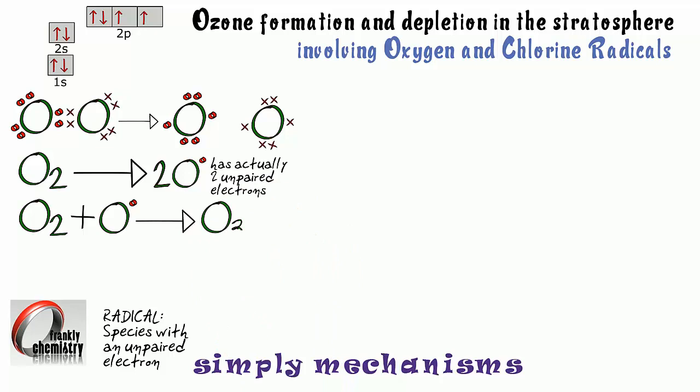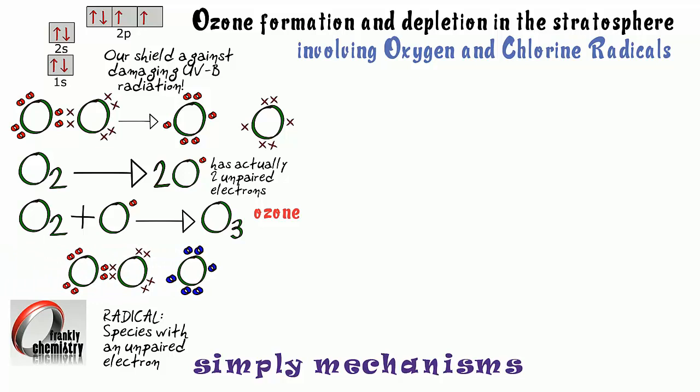Now this is how ozone is formed in the stratosphere. An oxygen molecule will hit one of those radicals and that forms our ozone molecule. And ozone shields us against the damaging UVB radiation which causes skin cancer amongst other things.